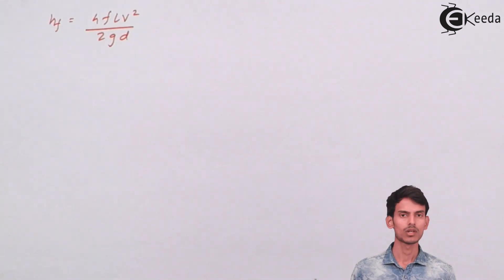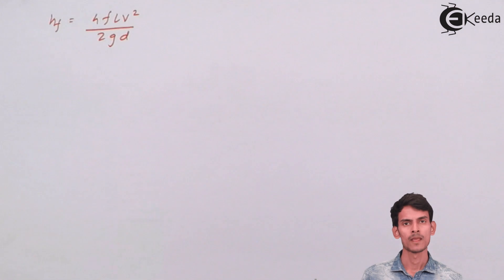If you can recollect the formula for Darcy's equation for head loss due to friction, it is hf = 4fLv²/2gd. Now the value of f is known, the length of the pipe is known, the velocity we've calculated, and gravity and diameter values are known. Substitute everything in this equation and get the value of head loss.